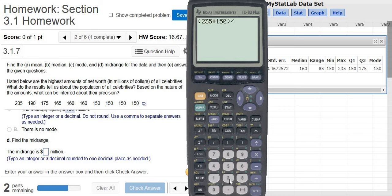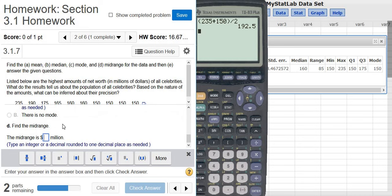You always divide by 2. So it's max plus min divided by 2. So 192.5. Let's try it. Check answer.